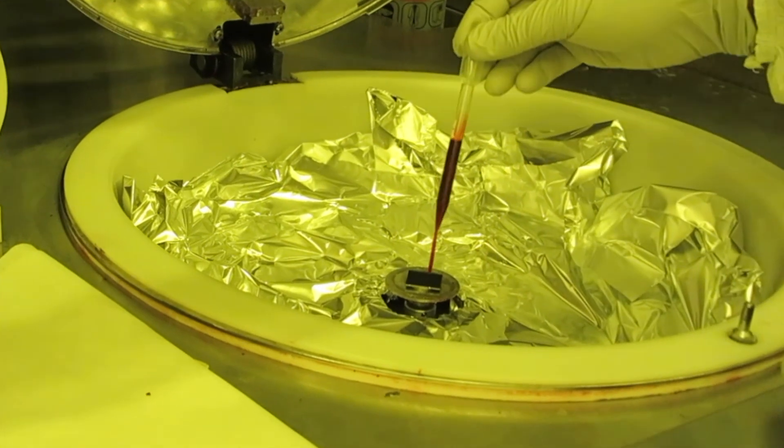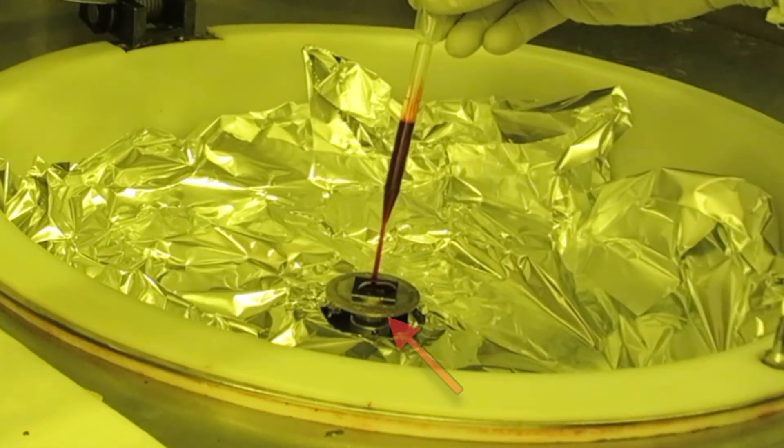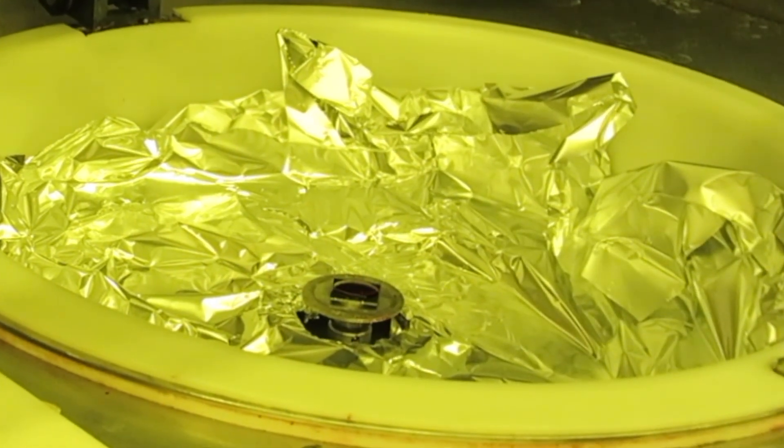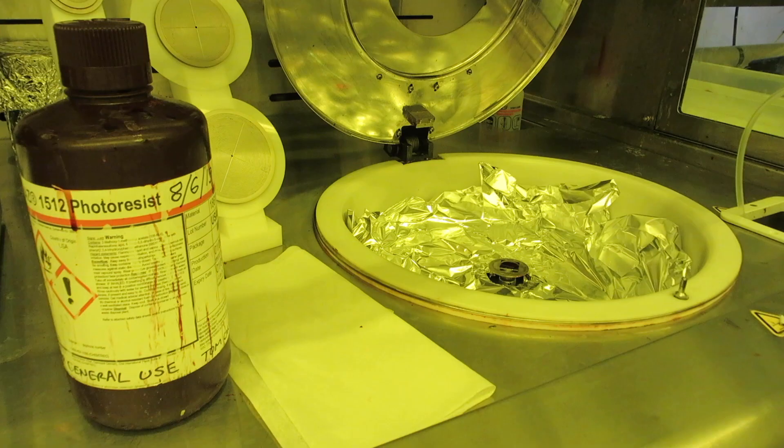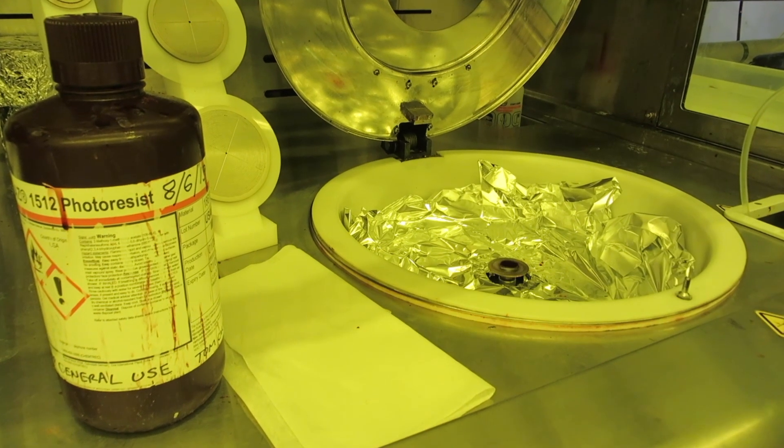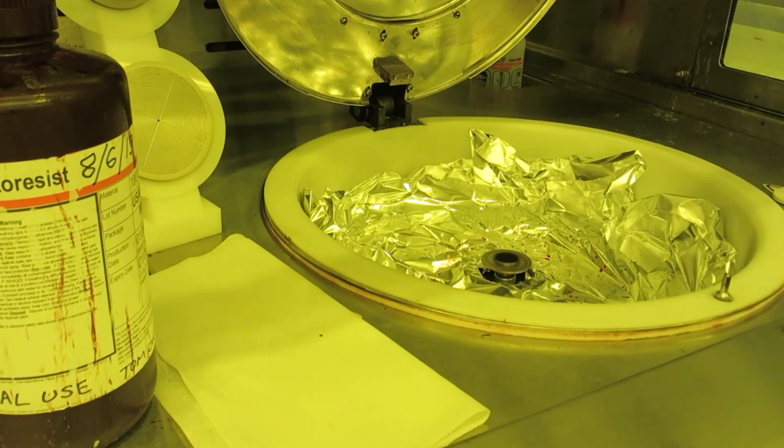Try to cover about two-thirds to three-quarters of the face of the chip. The spinner tilts slightly towards the rear, so start towards the front of the sample when you're dispensing it. Hit the green start button to start the process. You don't want to waste time after dispensing the resist before you start spinning, otherwise you may get a skin on the surface which will cause streaks in your resist.